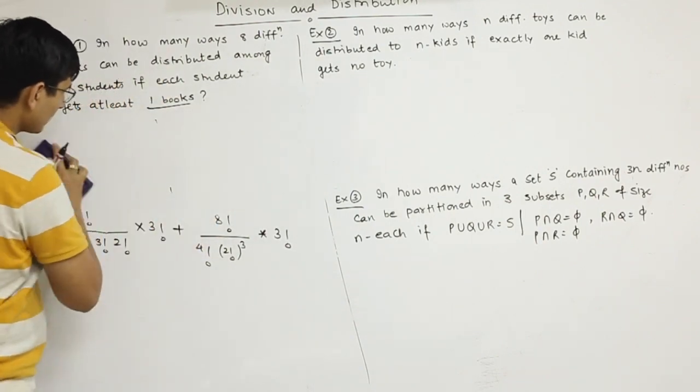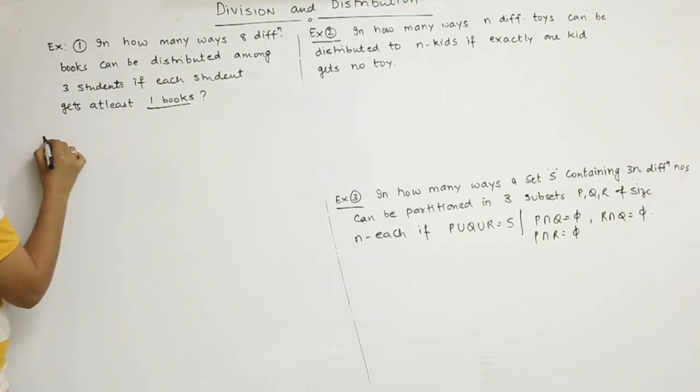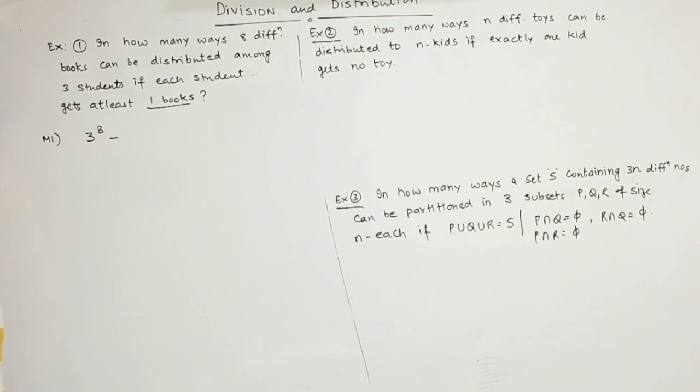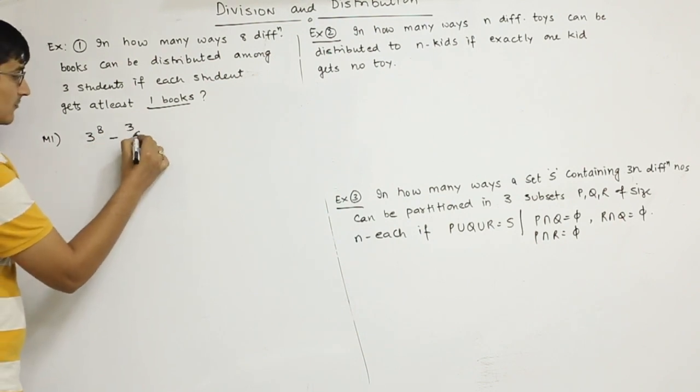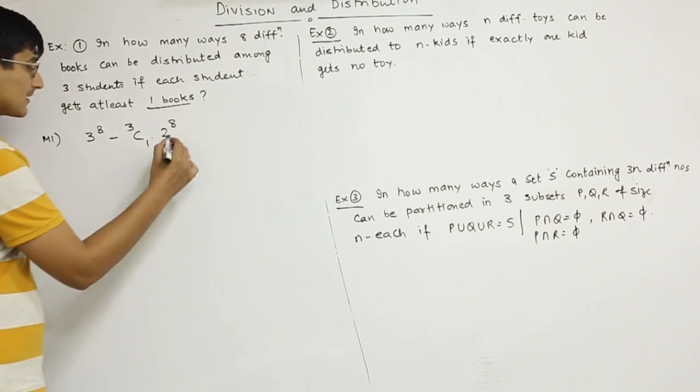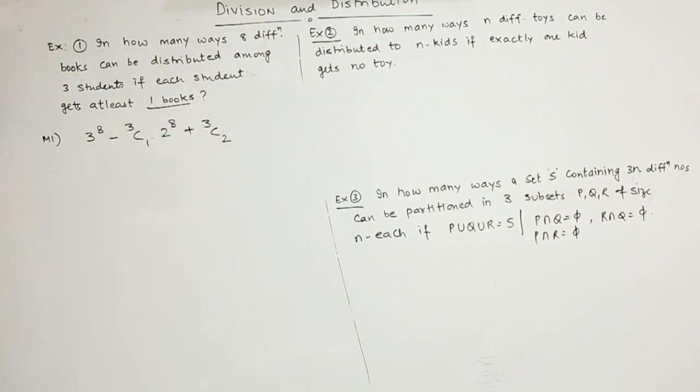Which means that every child has at least one book, the formula is r raise to power n minus r C 1 times (r minus 1) raise to the power 8, plus r C 2.